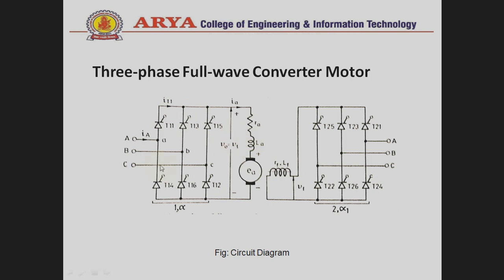Each group of thyristors — T1, T3, and T5 — operates for the positive half cycles, and T4, T6, and T2 operate for the negative half cycles. Each group of thyristors works for 120 degrees. When the positive half cycle is working, each thyristor works for 120 degrees, and similarly for the negative half cycle.